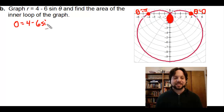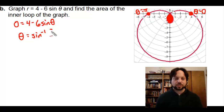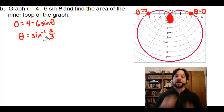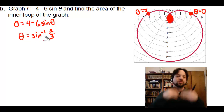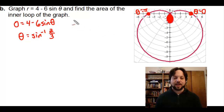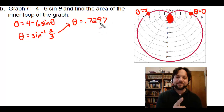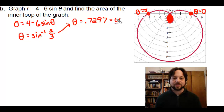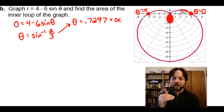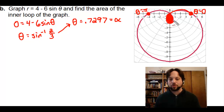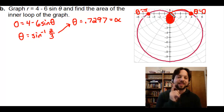Setting r equal to zero: 0 = 4 − 6 sin(θ), which gives theta = arcsin(2/3). One value is easy to find on a calculator: arcsin(2/3) ≈ 0.7297. Store that value — I'll call it alpha. That's where we first hit the pole. Then we form the inner loop and hit the pole one more time; that's the second value we need.